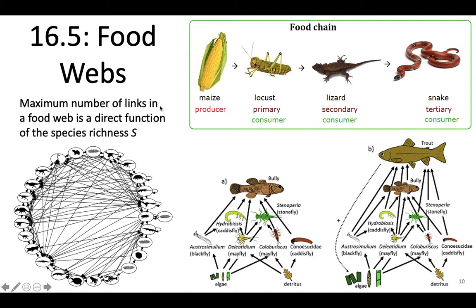Here's a representation of a food chain: locust eats the maize, lizard eats the locust, snake eats the lizard — it's like 'there was an old lady who swallowed a fly.' Here's a more intricate representation of a food web with and without trout. The basal species would be any kind of detritus and algae; intermediate species would be caddisfly and mayfly; and the top predator is the bully without trout, but the bully becomes an intermediate species when trout are introduced. You can also represent food webs with all species around the outside and all connections on the inside.